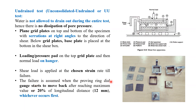The shear load is applied until failure occurs. Failure is assumed when the proving ring dial gauge starts moving back — that is, after reaching the maximum value — or at 20% of the longitudinal distance, which is 12 millimeters, whichever occurs first, at which point we stop the experiment. So in the undrained test, only plain metal grid plates are used, not perforated plates.